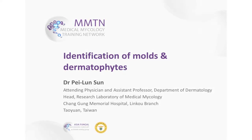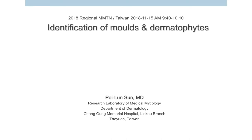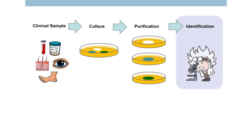My talk today is identification of the molds and the dermatophytes, and actually I talk about identification of hyphomycetes because it's much more common. Everything starts from sample collection — you have a patient, you collect something, you want to make a diagnosis. You have various kinds of specimens, you process and pre-treat them, inoculate onto the plate, purify them to separate them, and then identify them. I assume everybody knows the first three steps, so today we focus on the identification part.